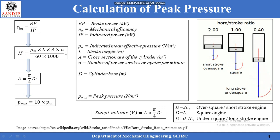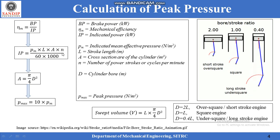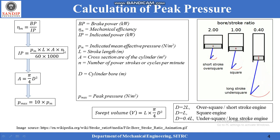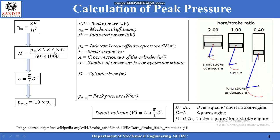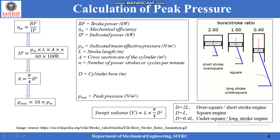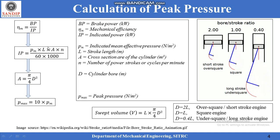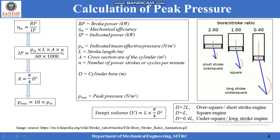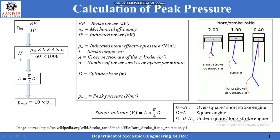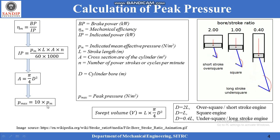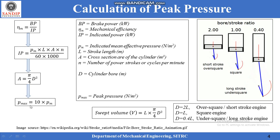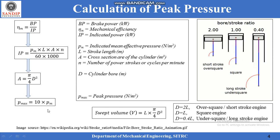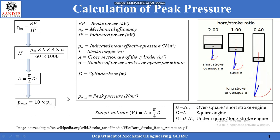For a four-stroke engine, N is half of the speed, and for a two-stroke engine it is equal to the speed of the engine. L into A together gives the value of swept volume. With known swept volume, corresponding maximum speed of the engine, and indicated power, mean effective pressure can be calculated. By multiplying mean effective pressure by a factor of 10, the maximum pressure — that is, peak pressure — can be calculated. With this, the design will start.